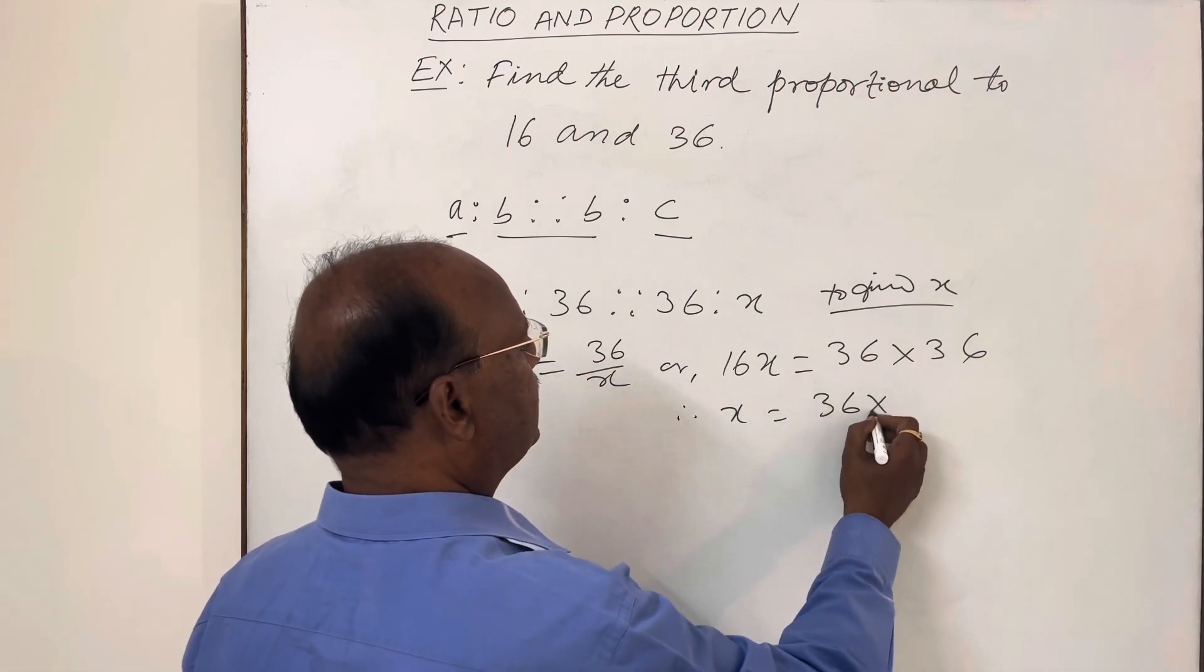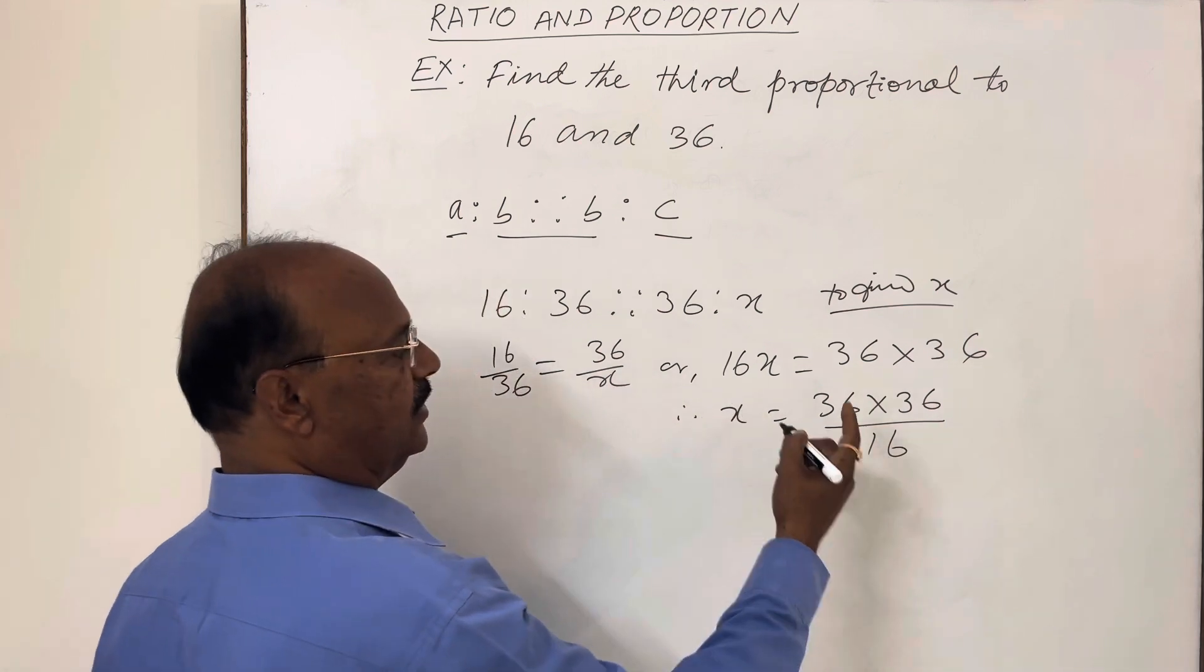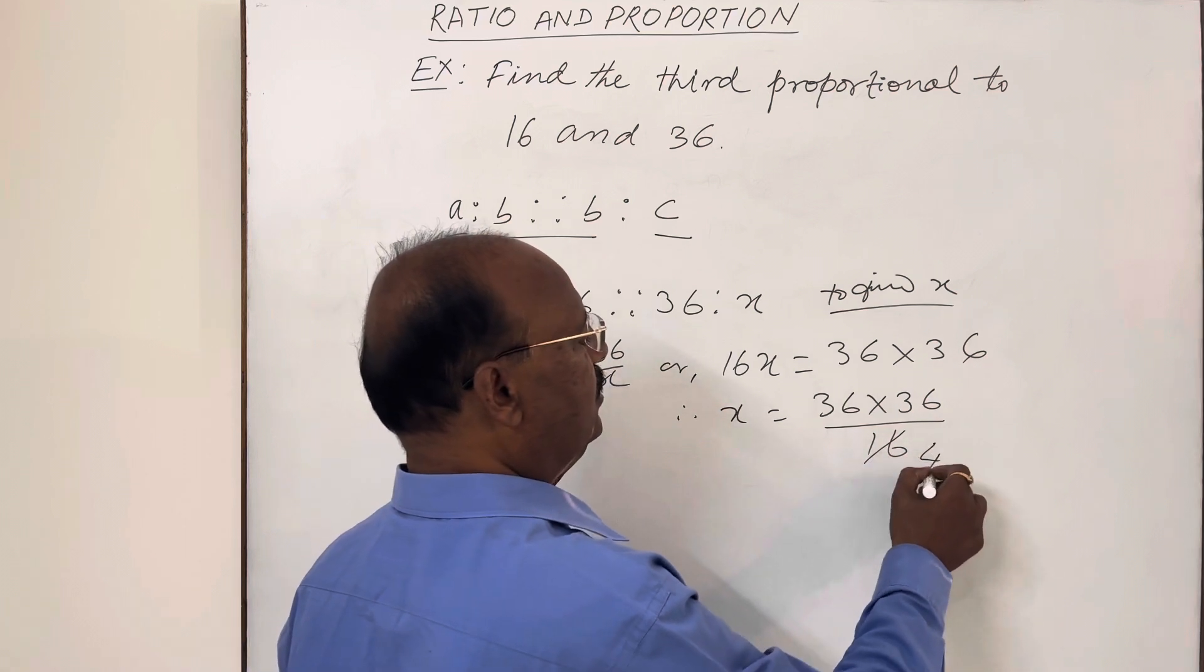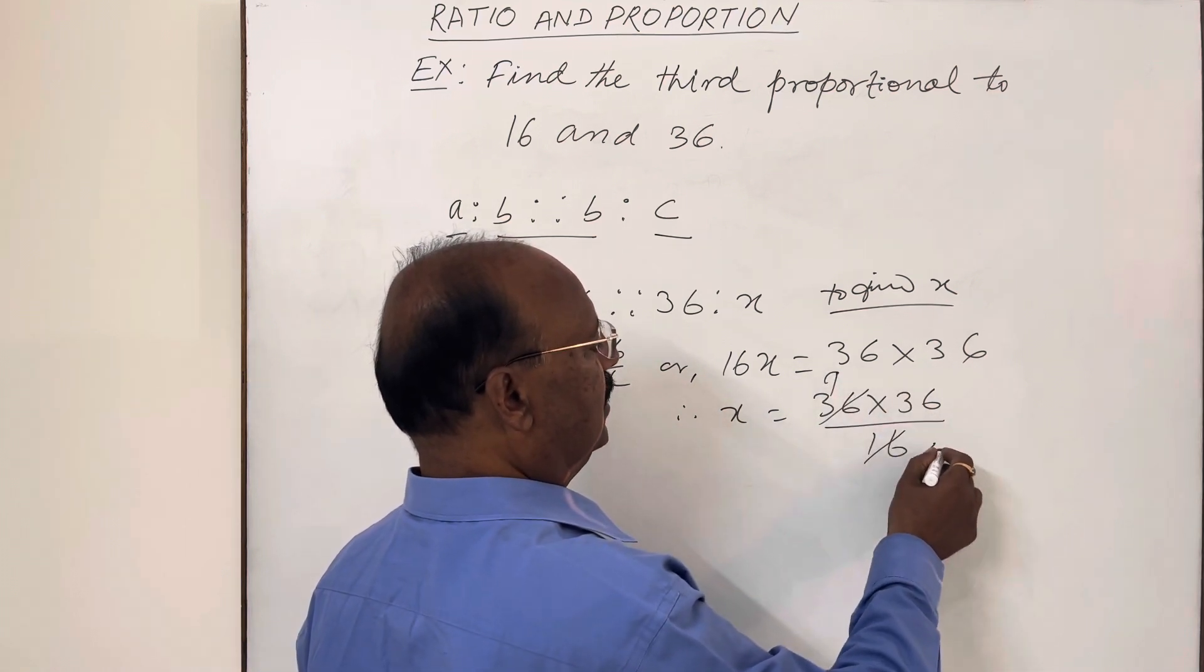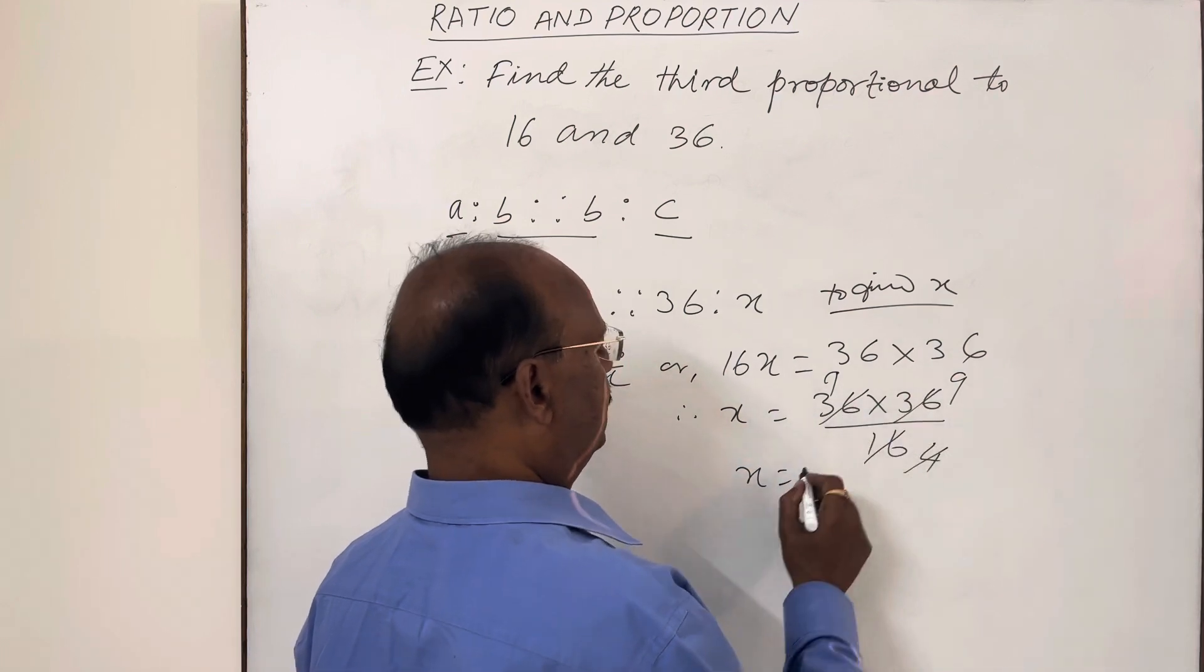equal to 36 into 36 divided by 16. Let us simplify it. We will get the answer. So 4 goes into 16, 4 goes into 36, again 4 goes into 36. So X is equal to 9 into 9,